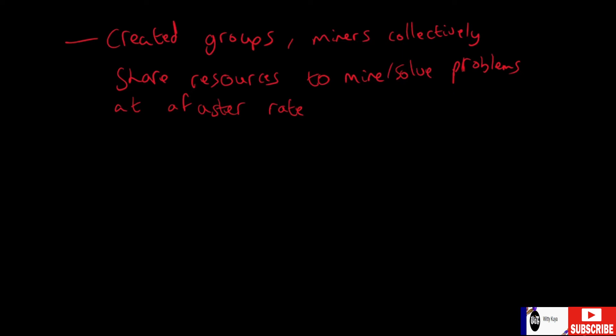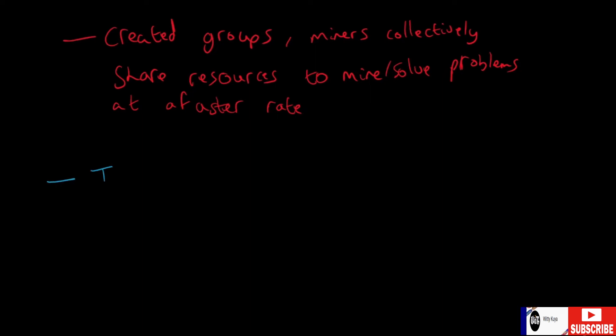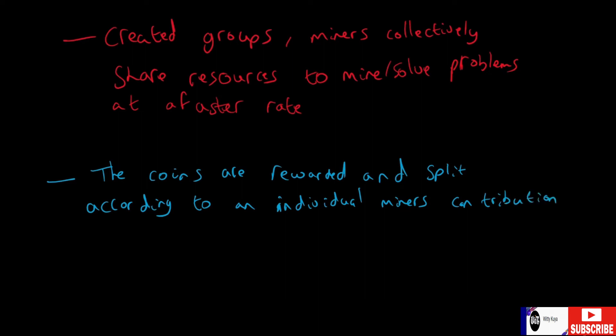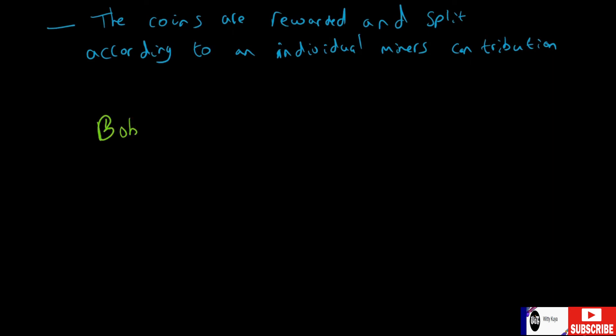You might think, how are the Bitcoins that are generated split between the miners? They're not evenly split, which they shouldn't be. The coins are rewarded and split according to an individual miner's contribution.